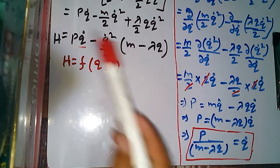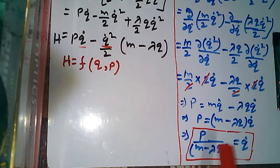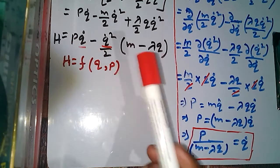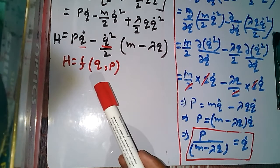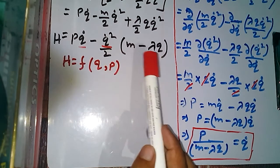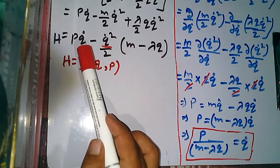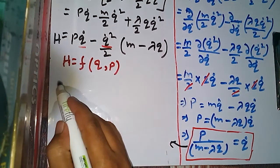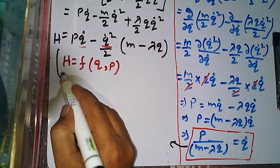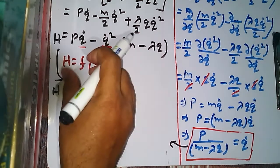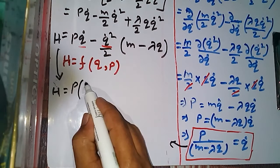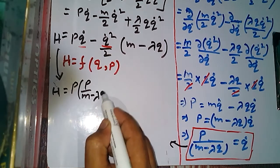If we substitute this q̇ into the Hamiltonian, the whole expression becomes a function of p and q, which is what we need. Now we substitute q̇ = p/(m - λq) into H. The first term p·q̇ becomes p·[p/(m - λq)] = p²/(m - λq).